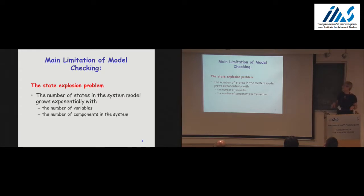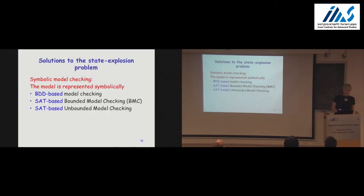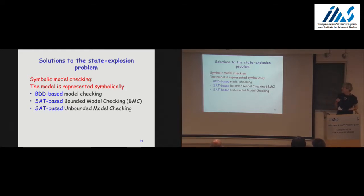This is the holy grail — we want to get scalability, being able to work with large systems. This is the state explosion problem, and we need some solutions. One solution is to still have in mind the model — this graph — but describe it symbolically. There are several types of representations well-developed over the years.